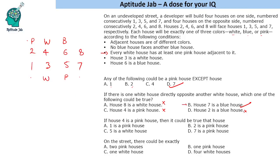The third question: if house 4 is a pink house, which of the following could be true? House 1 being pink is possible — no condition prevents it. House 2 being pink is not possible because if house 4 is pink, house 2 cannot also be pink. House 5 is already pink, so it cannot be white. House 7 cannot be pink because house 5 is already pink and adjacent houses must differ. Therefore, the answer is: house 1 is a pink house.